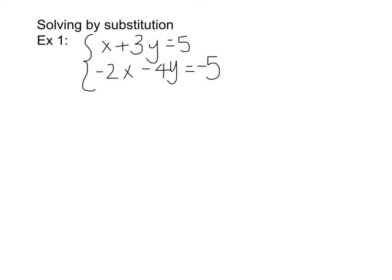In example 1, our two linear equations are x plus 3y equals 5, and negative 2x minus 4y equals negative 5. You normally choose to solve by substitution when it tells you to, but also if you have a variable whose coefficient is 1, that's when you choose substitution as well.